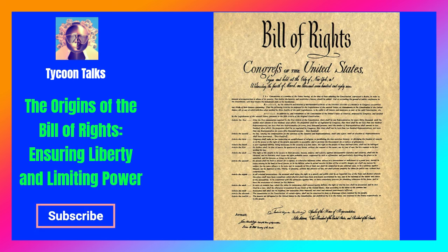Anti-Federalist Concerns: As the Constitution was presented to the states for ratification, it faced strong opposition from the Anti-Federalists. They were concerned that the new Constitution concentrated too much power in the hands of the federal government and lacked clear protections for individual rights. Prominent Anti-Federalists like Patrick Henry and George Mason argued that without a specific bill of rights, the federal government might infringe on personal freedoms and state sovereignty.